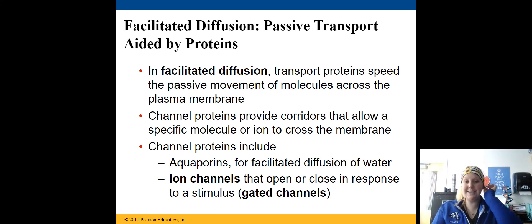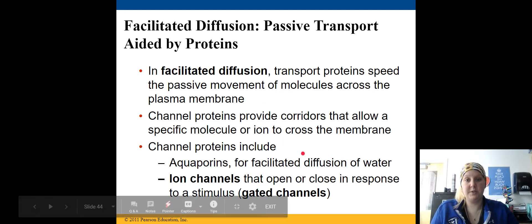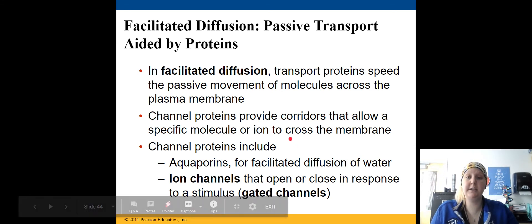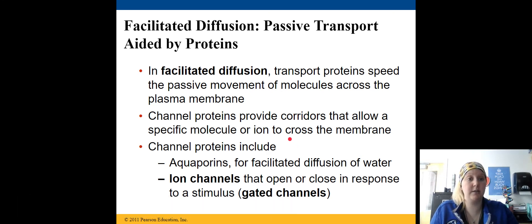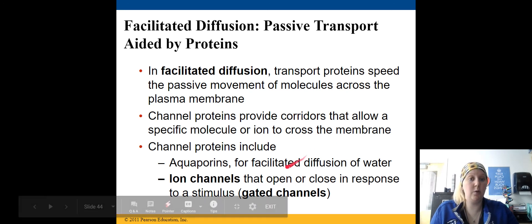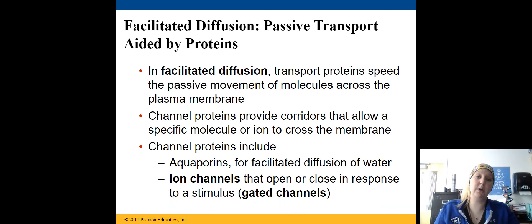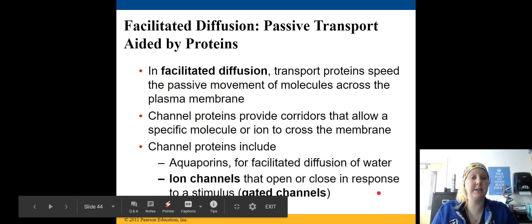Facilitated diffusion is diffusion with the use of transport proteins. These speed up the passive movement of molecules across the cell membrane. Channel proteins provide corridors or hallways that allow specific molecules or ions to cross the membrane. Aquaporins are for water, and ion channels are very specific to the ions in which they diffuse. And they open and close in response to a stimulus that's called a gated channel.